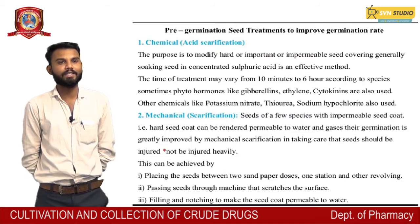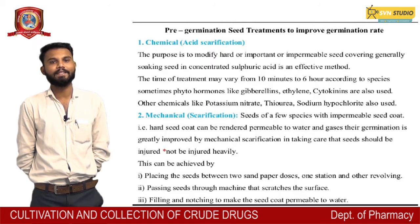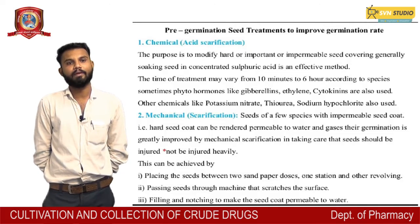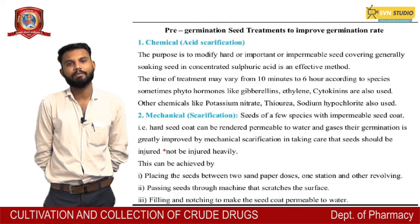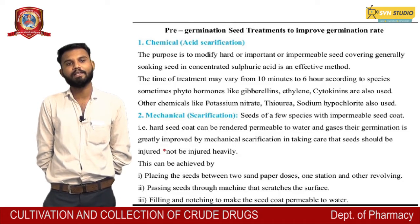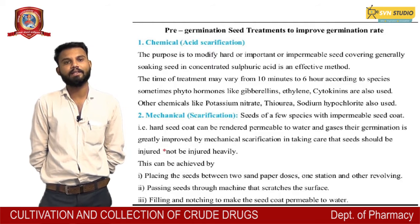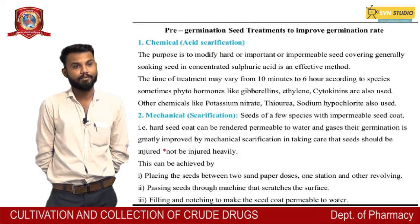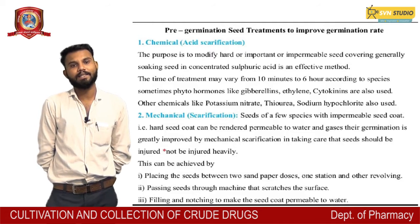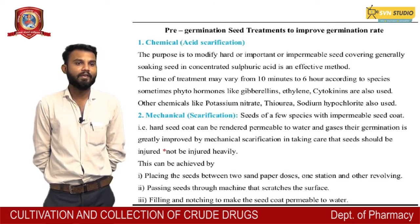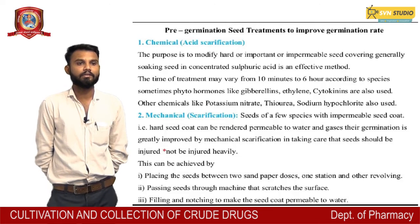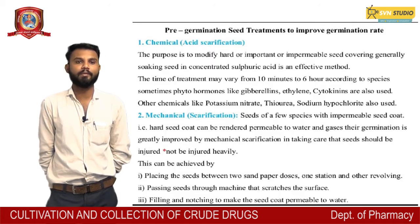2. Mechanical treatment — seeds of a few species with impermeable seed coats (hard seed coats) can be rendered permeable to water and gases. Their germination is greatly improved by mechanical scarification, taking care that seeds should not be injured heavily. This can be achieved by: placing the seed between two sandpapers (one stationary and another revolving), passing seeds through a machine that scratches the surface, or filing to make the seed coat permeable to water.